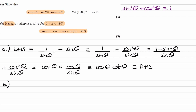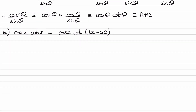So the equation that we have here can be rewritten using the identity above. What we do instead is we bring everything to one side and then we factorise.